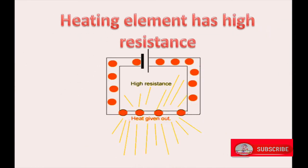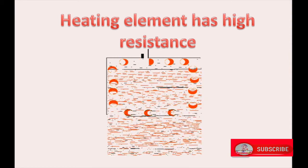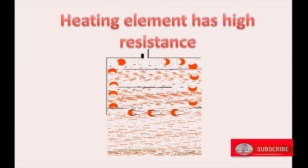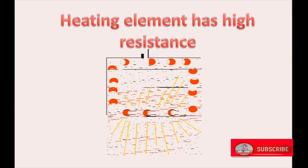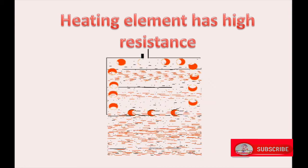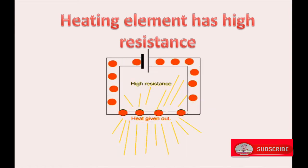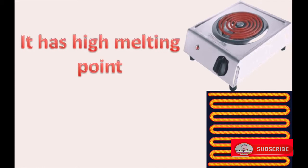Heating element has high resistance. Due to high resistance, there is difficulty in passing electric current, and as a result it radiates heat energy. It has high melting point, therefore even when it gets heated or becomes very hot and achieves high temperature, it does not melt.